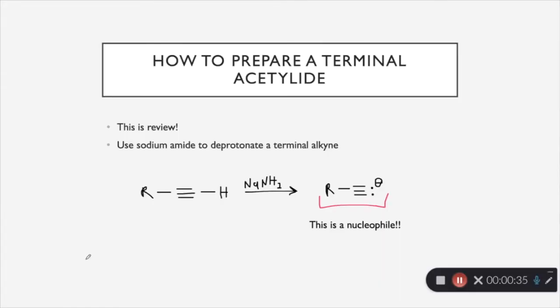So first, let's talk about a little bit of vocabulary. Right here, we have our terminal alkyne, and what that means is that the carbon on the end of the triple bond is only attached to a hydrogen. So this is what is considered terminal. And then we have right here our acetylide, and the acetylide is just a deprotonated terminal alkyne.